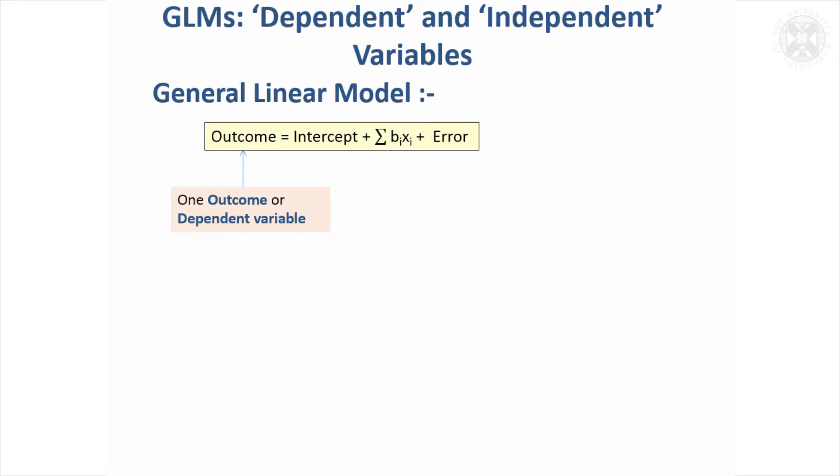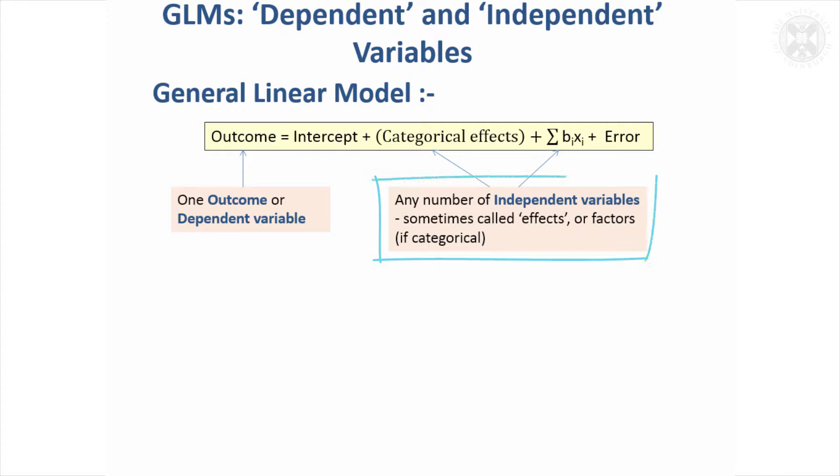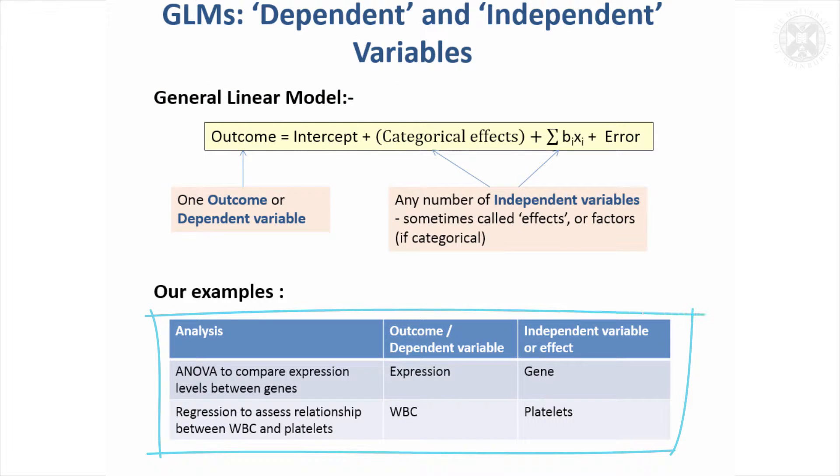This slide highlights some of the terminology. You always have one outcome in a general linear model—one thing you're trying to analyze—called an outcome or dependent variable. Everything on this side is called an independent variable, or sometimes these are called the effects in the model. When people write up publications, they talk about the independent effects or the independent variables in the model. These are always the things on the right-hand side being tested.